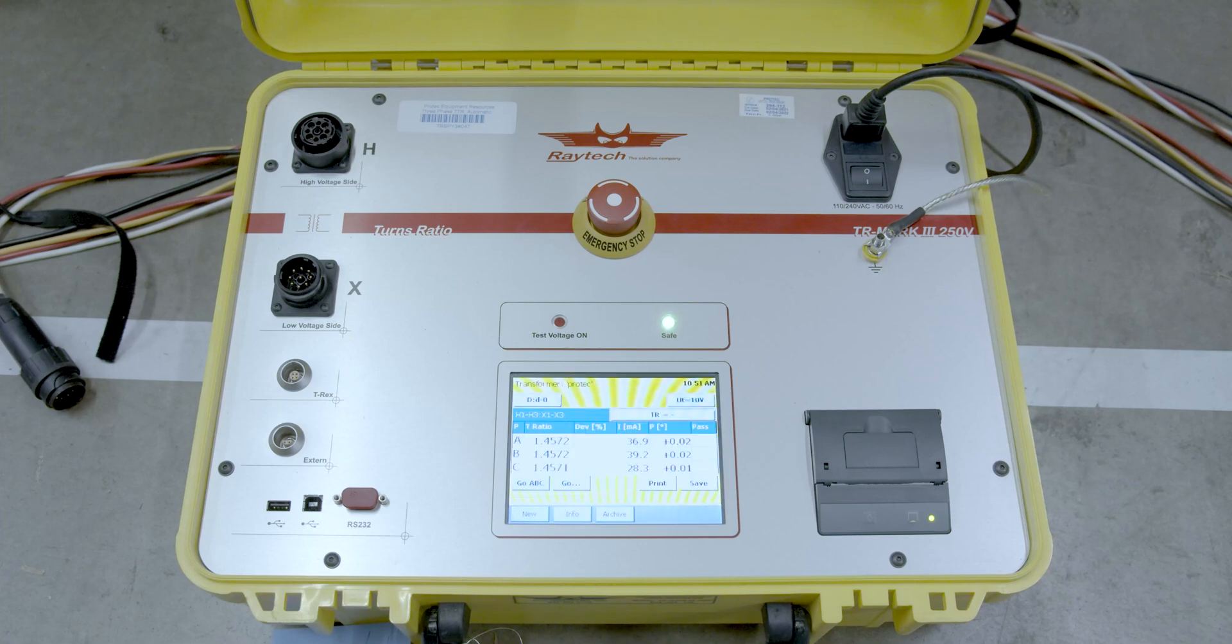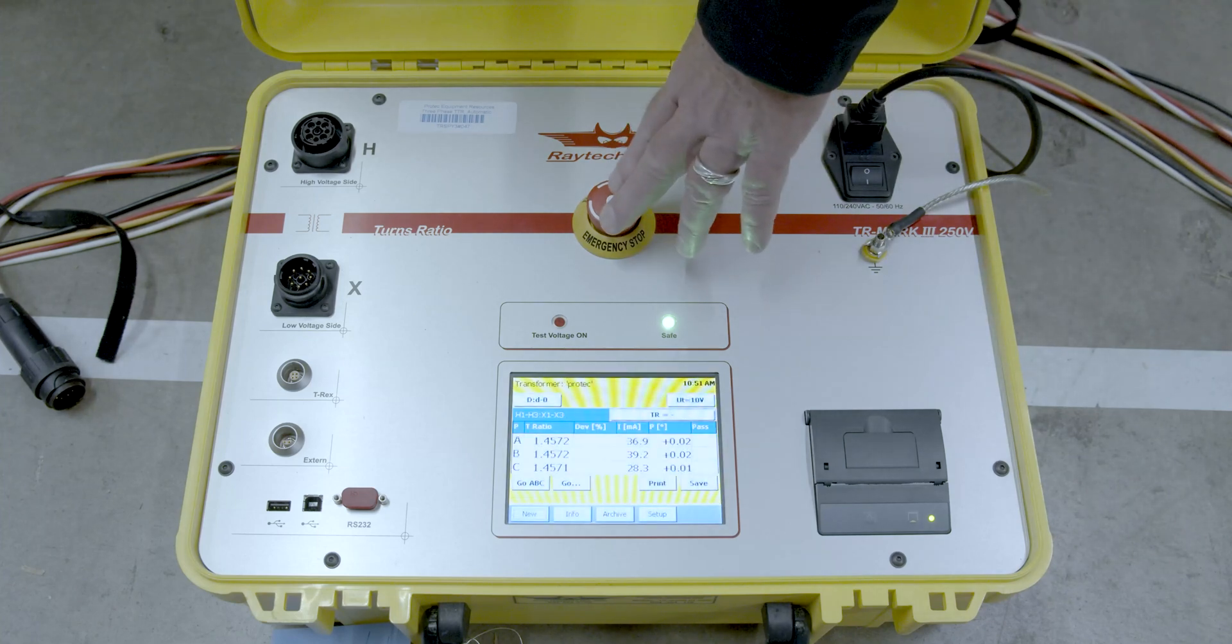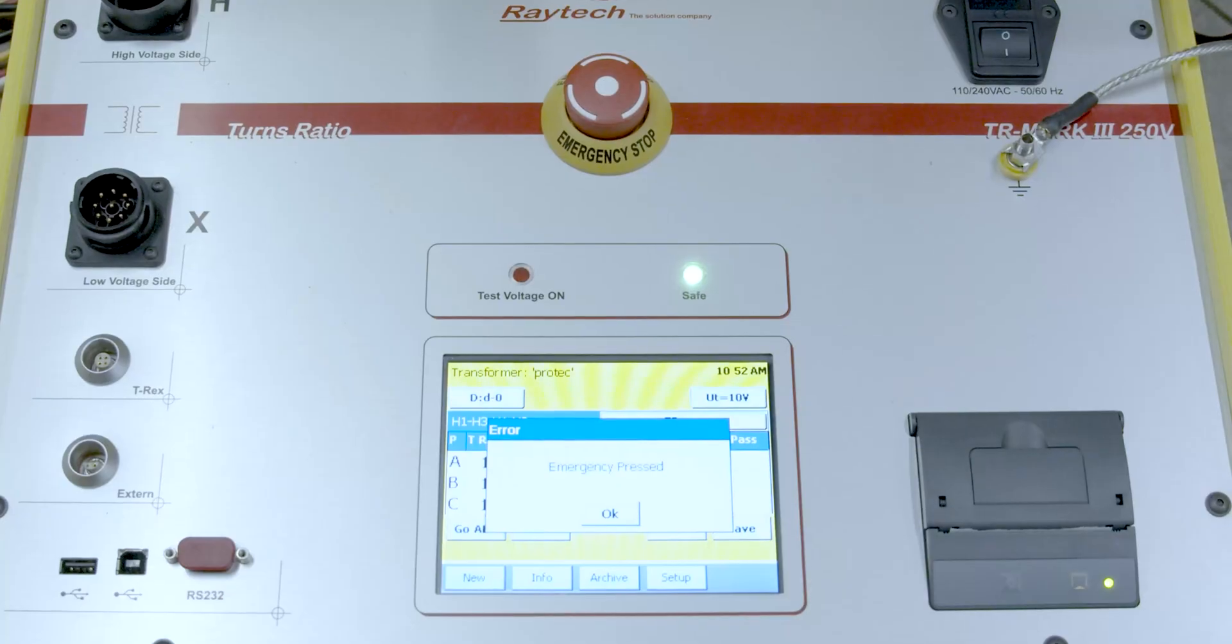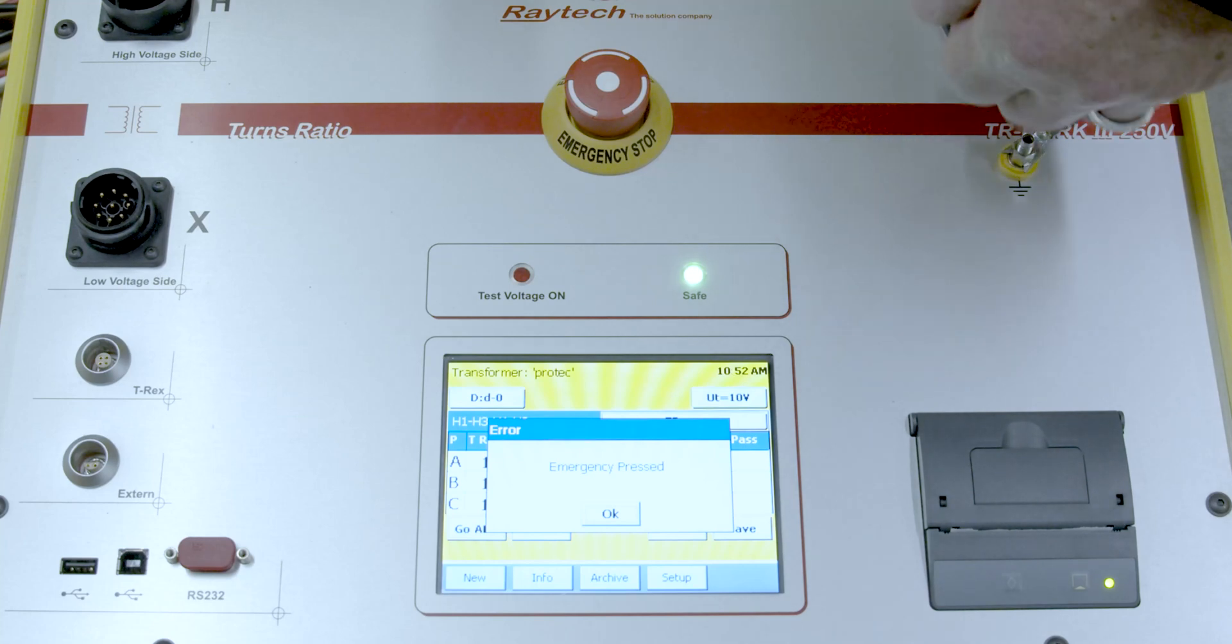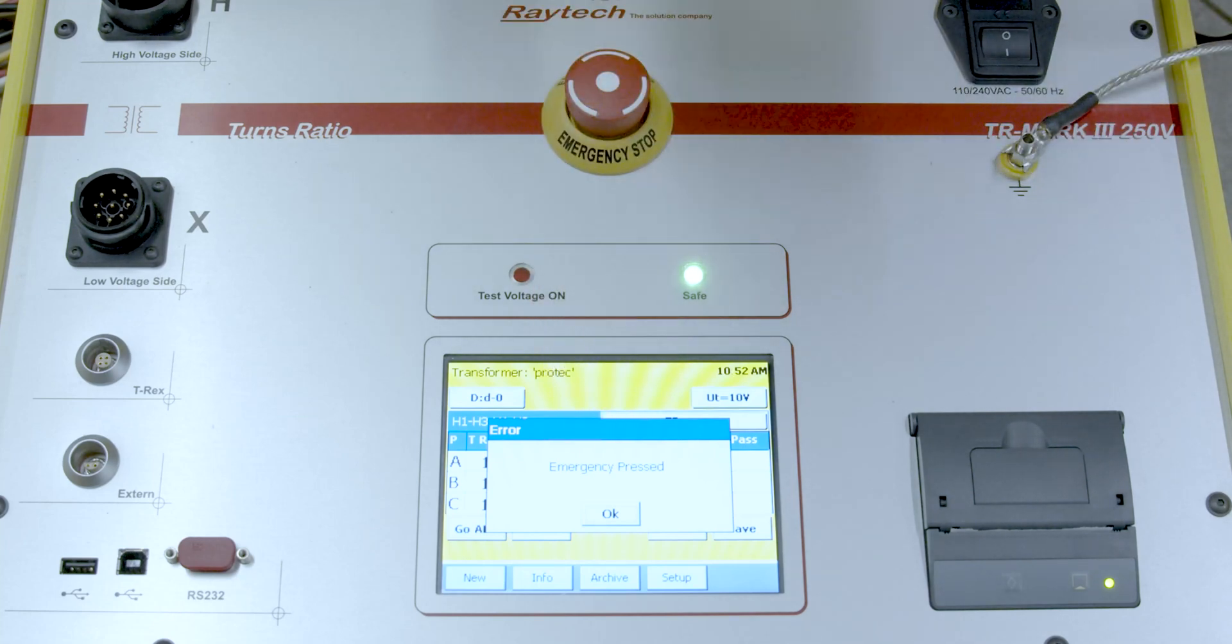Additionally we have an emergency stop button. If anything were to be wrong then you can just simply press that, then twist and release it. You'll notice the display shows that the emergency stop button was pressed and it would interrupt the output.